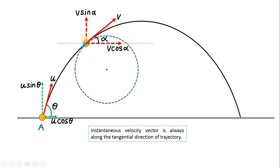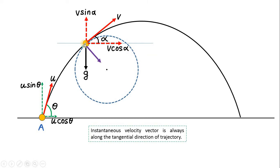What about the acceleration of this particle? If we ignore air resistance, the only force acting is gravitational force, which acts vertically downward. So the particle has acceleration due to gravity g only in the vertically downward direction. Notice that the angle between the velocity vector and the acceleration g is an obtuse angle. We now break this acceleration vector into two components: one along the radial direction toward the center of the circle, and another along the tangent.